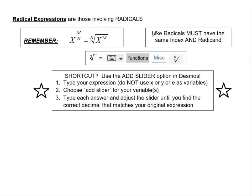Let's talk about like radicals. If you ever want to add or subtract radicals, they must be like radicals. Like radicals must have the same index — that's the number in the radical — and the same radicand, which is the number or expression underneath the radical.